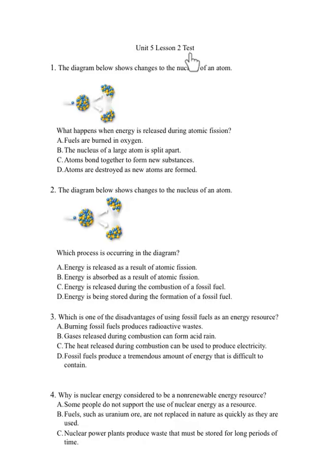Unit 5 Lesson 2 Test. Number 1. The diagram below shows changes to the nucleus of an atom. What happens when energy is released during atomic fission? A. Fuels are burned in oxygen. B. The nucleus of a large atom is split apart. C. Atoms bond together to form new substances. D. Atoms are destroyed as new atoms are formed.